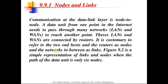What are nodes and links? Nodes can be a system or a router. Communication at the data link layer is node to node. A data unit from one point in the internet needs to pass through many networks to reach another point. The nodes act like the source and the destination, and the link is a bridge between those two nodes to transfer data. Routers also act like a node.